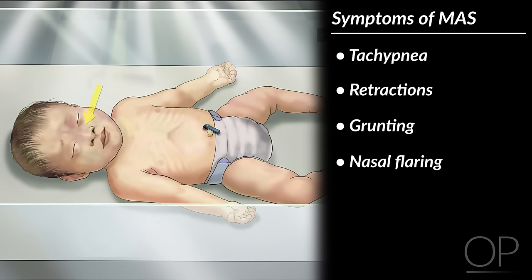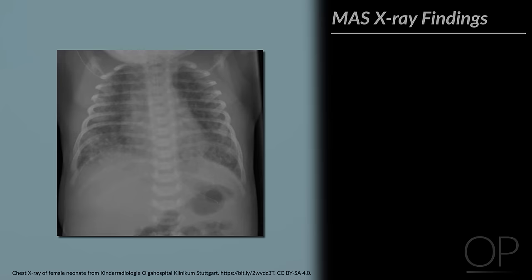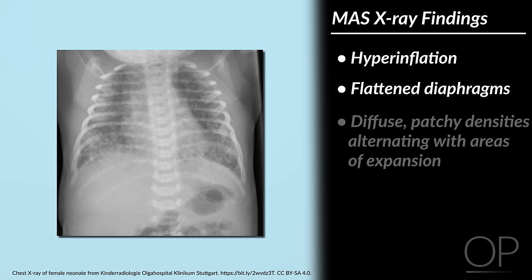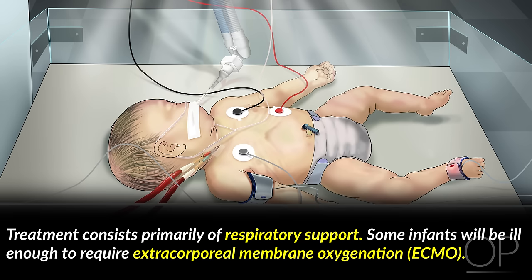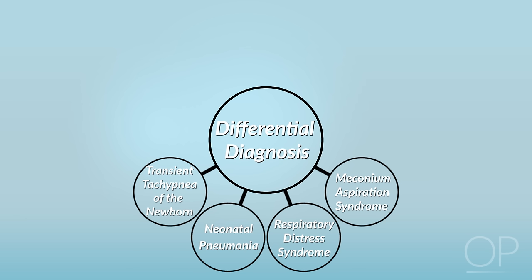These infants frequently have marked tachypnea, retractions, grunting, and flaring, as well as cyanosis. Their respiratory symptoms develop immediately after birth. The chest x-ray typically shows hyperinflation with flattened diaphragms, as well as diffuse patchy densities alternating with areas of expansion. Treatment consists primarily of respiratory support. Some infants will be ill enough to require extracorporeal membrane oxygenation, or ECMO.